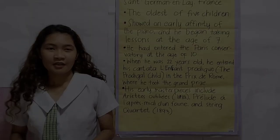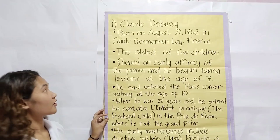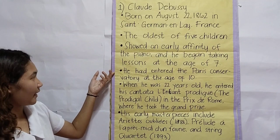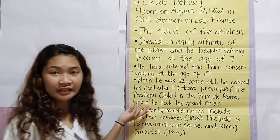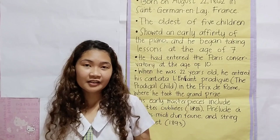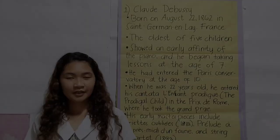The first famous modern period composer is Claude Debussy, born on August 22, 1862 in Saint-Germain-en-Laye, France. He was the oldest of five children, showed early affinity for piano, began lessons at age seven, and entered the Paris Conservatory at age ten. At 22, he entered his cantata L'Enfant Prodigue in the Prix de Rome, where he took the Grand Prize. His early masterpieces include Ariettes Oubliées, Prélude à l'après-midi d'un faune, and String Quartet. Debussy's music was a departure from traditional forms, and his use of non-traditional scales and harmonies greatly influenced the development of 20th century music.